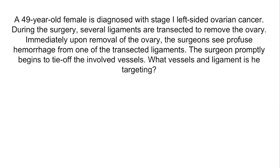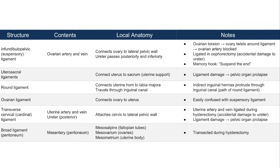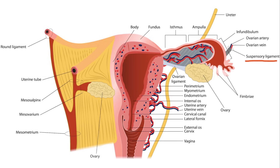Let's do a question. A 49-year-old female is diagnosed with stage 1 left-sided ovarian cancer. During surgery, several ligaments are transected to remove the ovary. Immediately upon removal, the surgeon sees profuse hemorrhage from one of the transected ligaments and promptly begins to tie off the involved vessels. What vessels and ligament is he targeting? The answer is the ovarian artery and veins, within the suspensory ligament, also called the infundibulopelvic or IP ligament, which is ligated during oophorectomy.